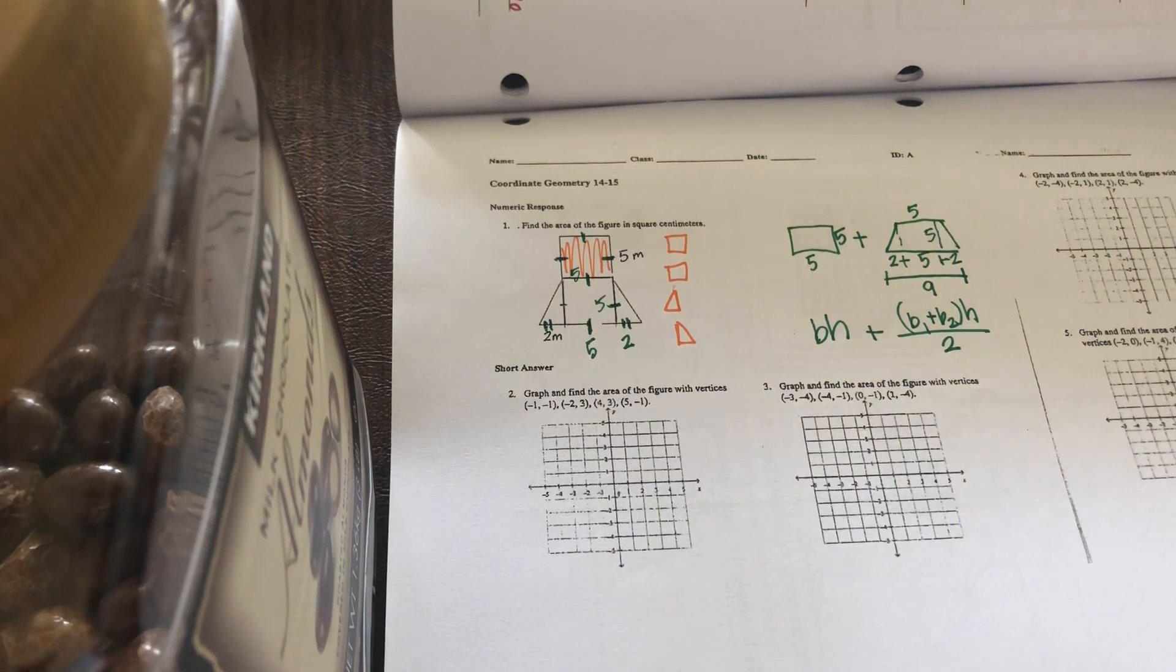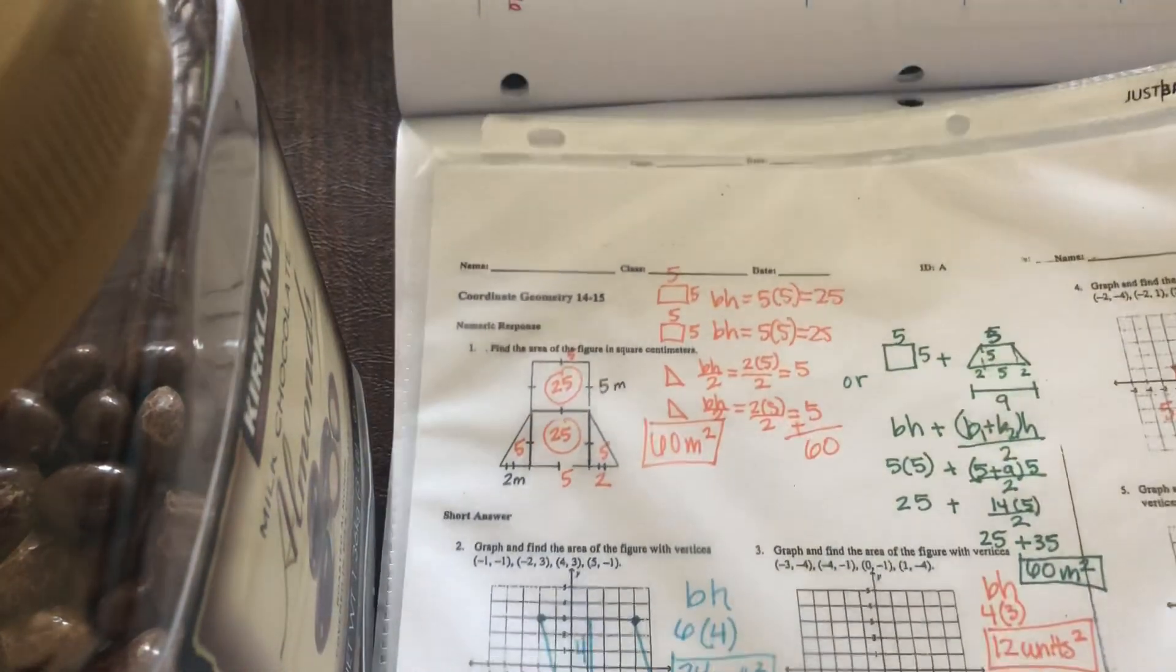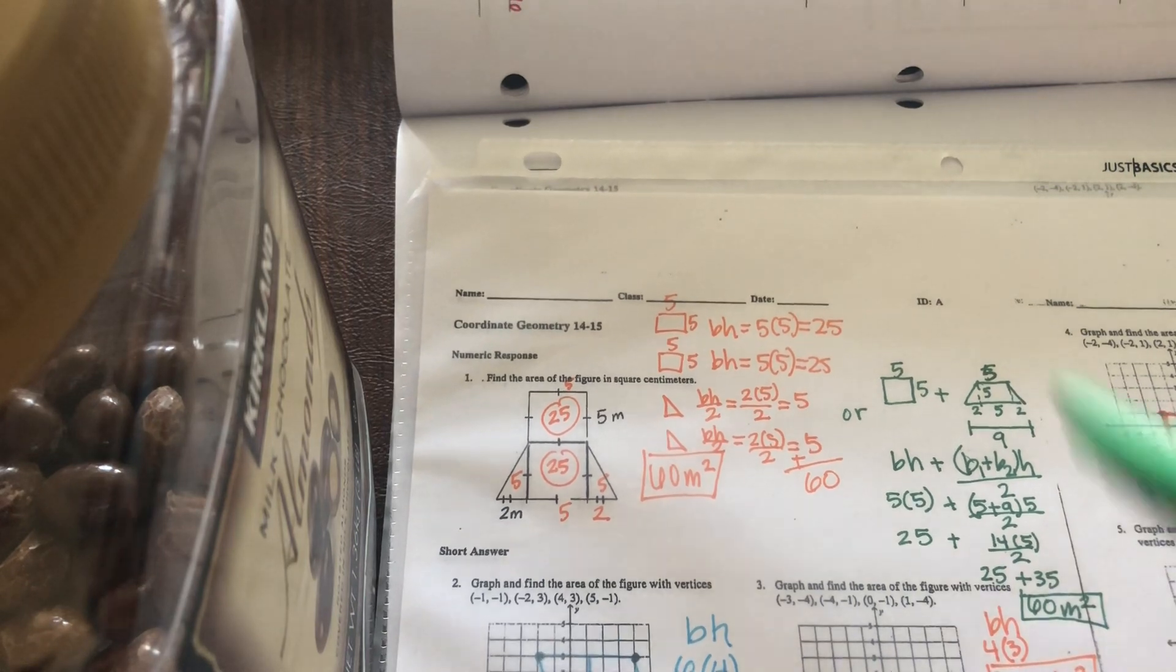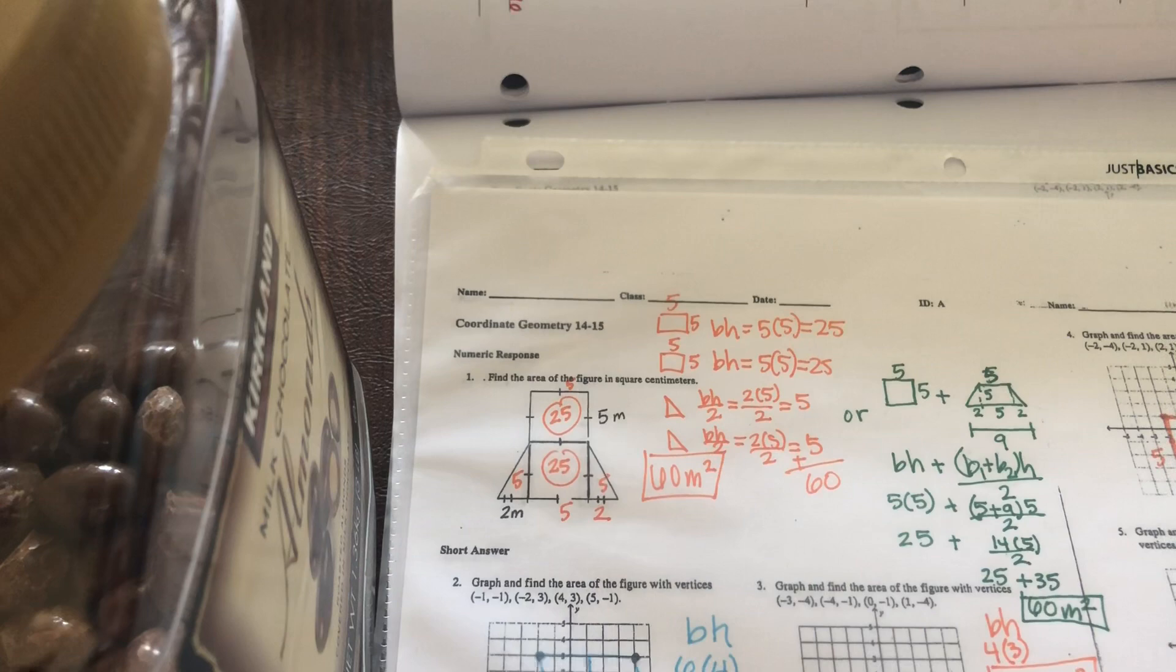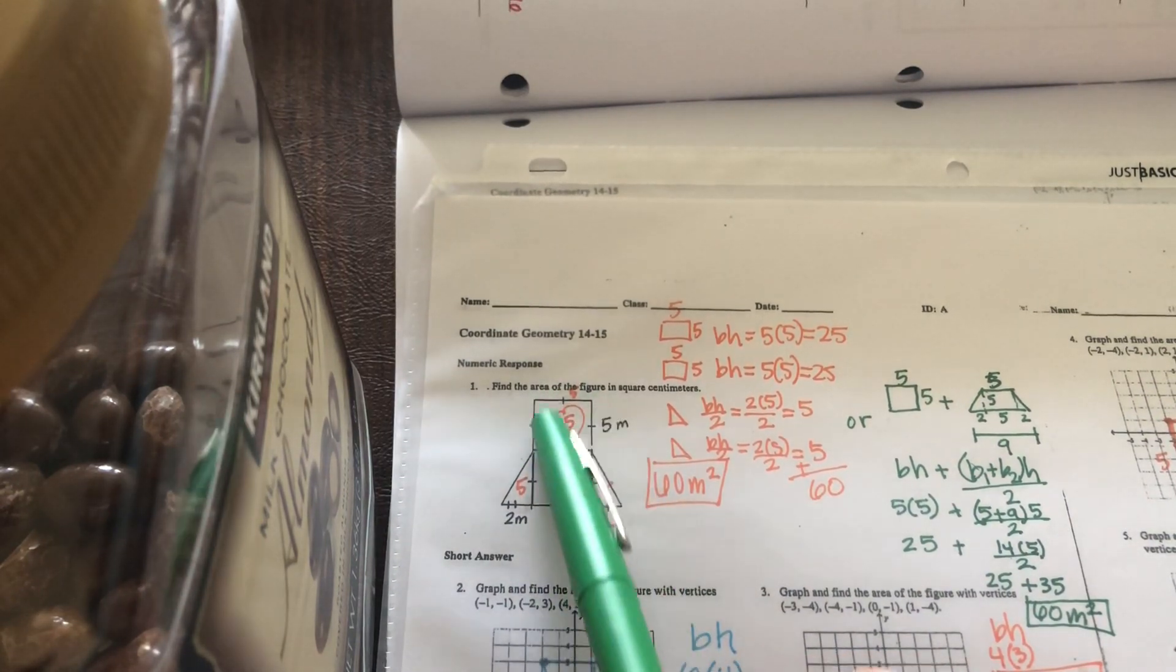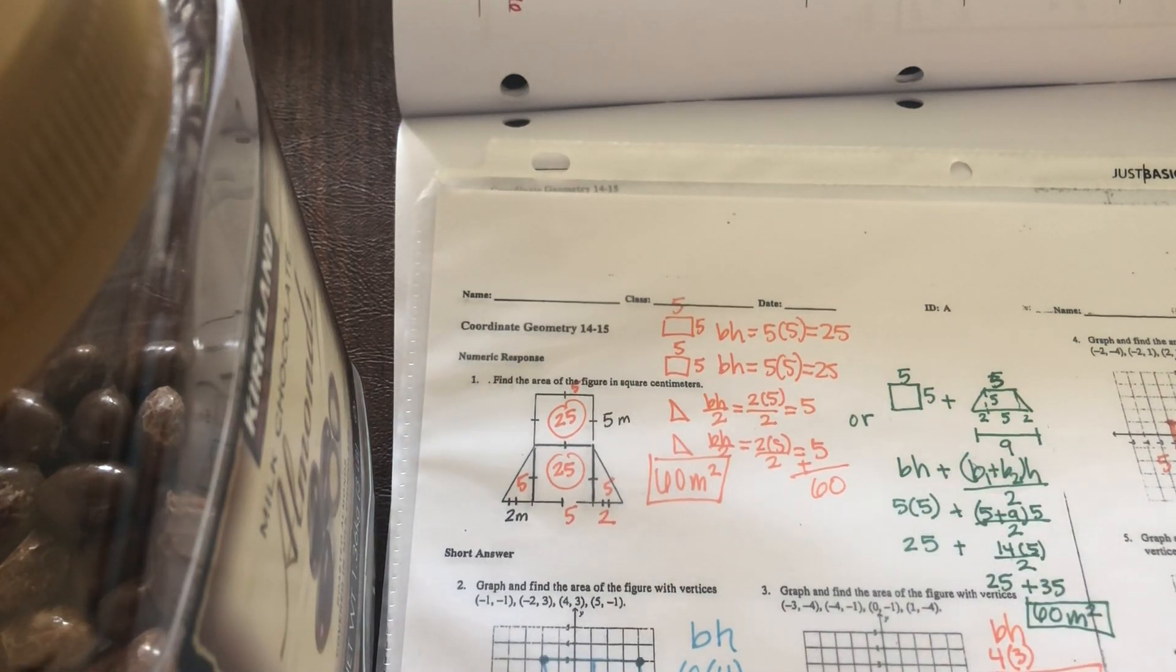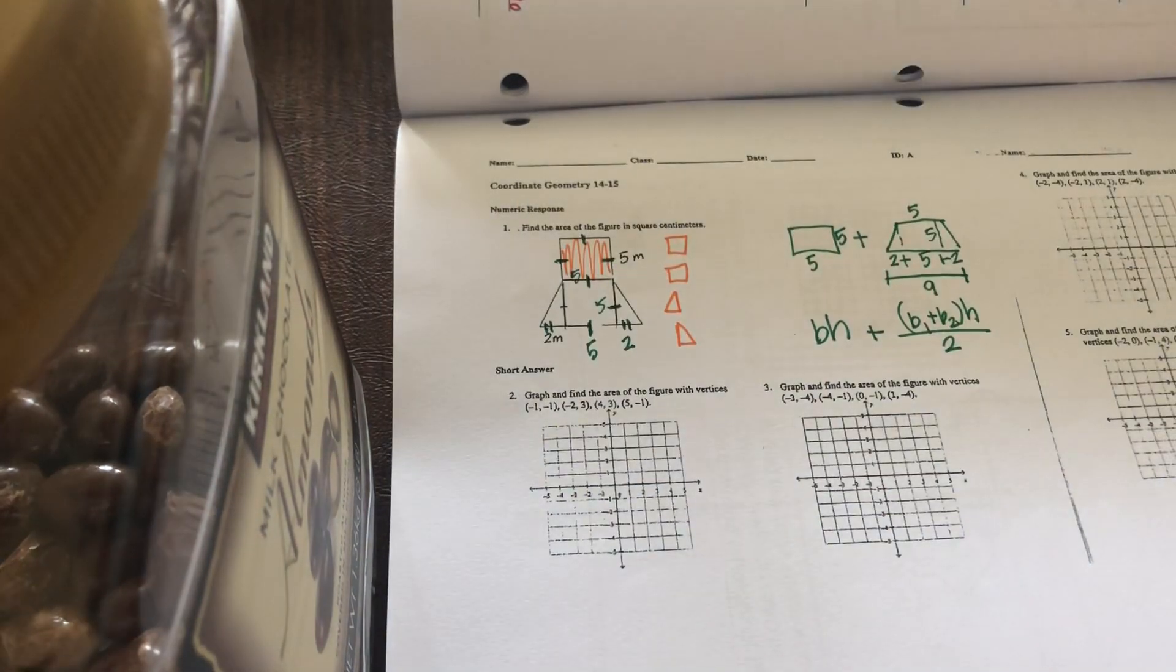Once you worked it out, you should have gotten an area of 60 meters squared, whether you did the long way of adding all the individual shapes together, which I wouldn't recommend, but you can. Or if you saw that this is a rectangle or square, and then this is a trapezoid and you added it together that way, you got 60 meters squared. Okay. Now let's do some actual coordinate geometry like we promised this video was going to.